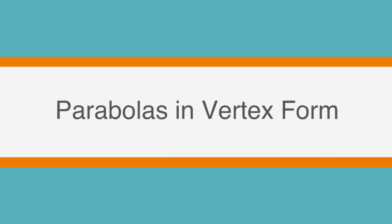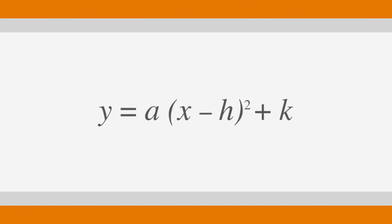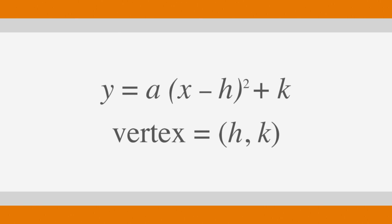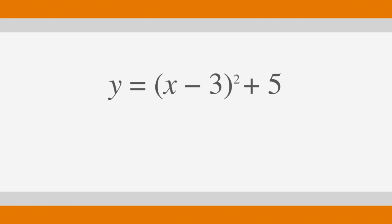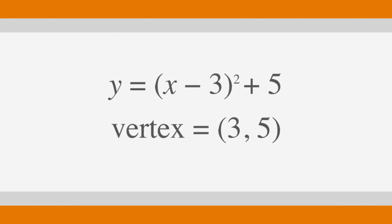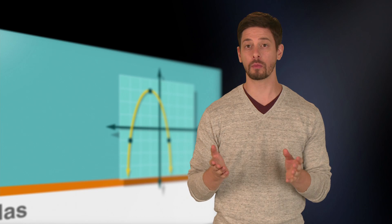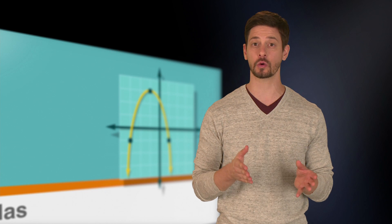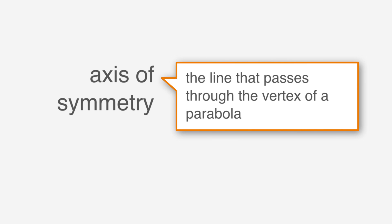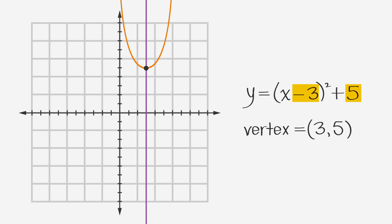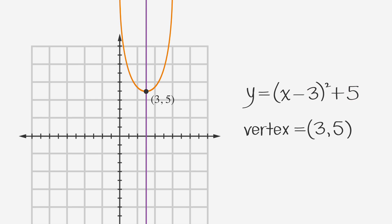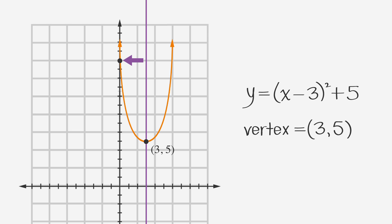Now let's look at the vertex form of the parabola and how it might appear on the ACT. The equation of a parabola will sometimes be given in vertex form: y equals a times the quantity x minus h, squared, plus k. The vertex, or turning point of the parabola, is the coordinate point (h, k). For example, y equals the quantity x minus 3 squared plus 5 is in vertex form, and its vertex is at (3, 5). All parabolas that open upward or downward have a vertical axis of symmetry that passes through the x-coordinate of the vertex, which is the line x equals 3 in this case.